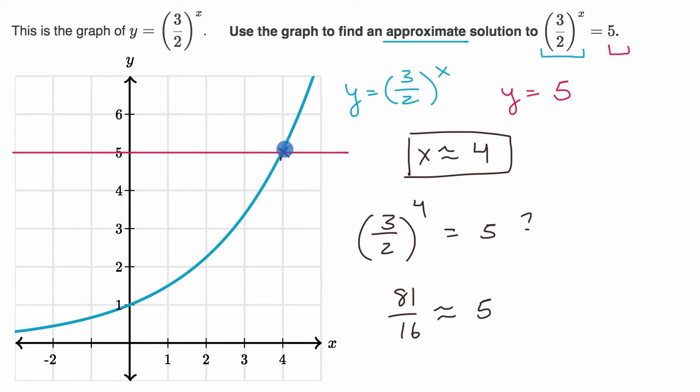And if you had a graphing calculator that could really zoom in and zoom in and zoom in, you would get a value, you would see that x is slightly different than x equals 4. But let's do another example. The key here is that we can approximate solutions to equations through graphing.